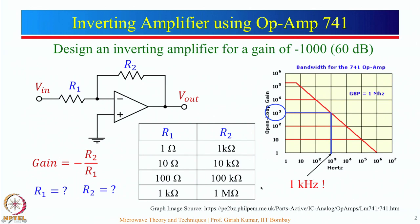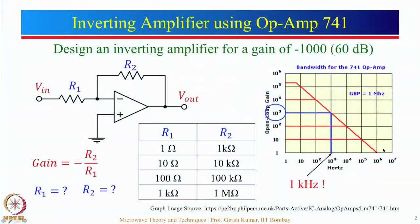This is where the difference comes — when you are designing an amplifier, you must know what parameters to choose so that it fulfills different requirements. For example, if we choose R1 equal to 1 ohm, then the input impedance looking at that point is equal to R1, which would be 1 ohm. For an amplifier, a generally desirable characteristic is that it should have a very high input impedance.